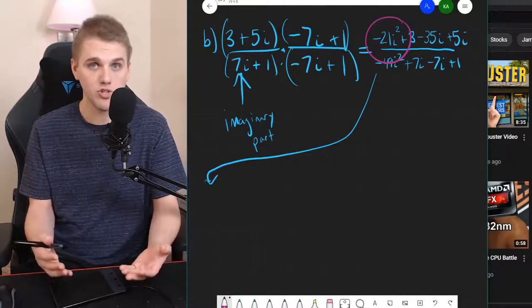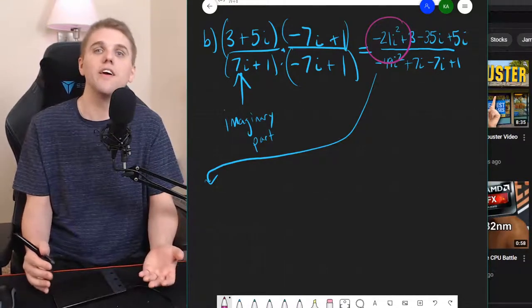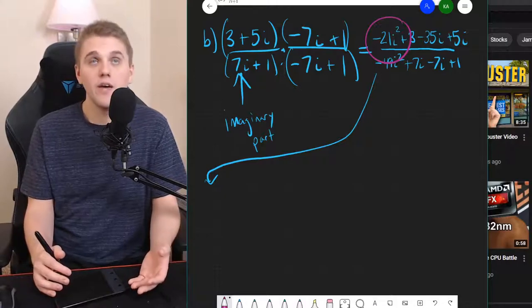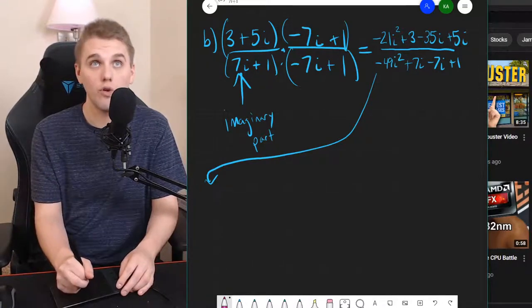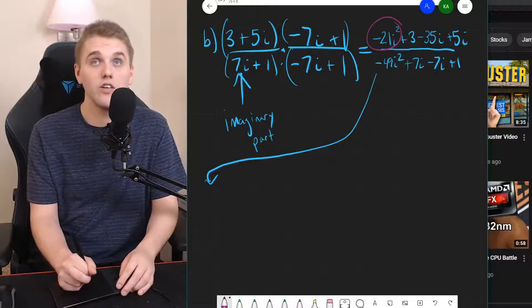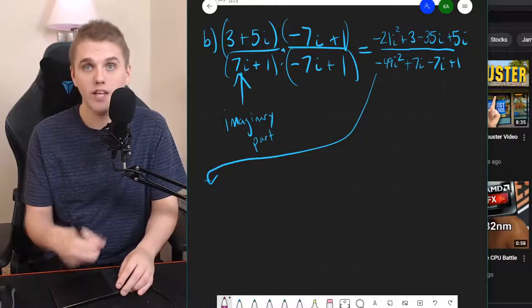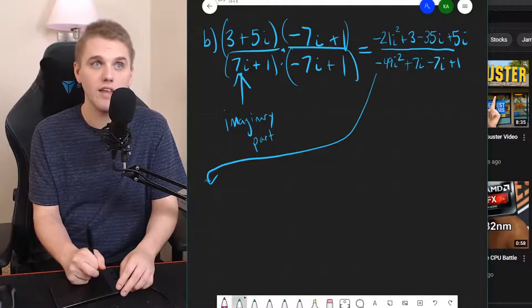What you're looking at in that purple circle is just 21, but it's just written in a weird way. So there are two terms in the numerator that are real numbers or the real part: 21 and 3. And so when you add those together, you get 24.